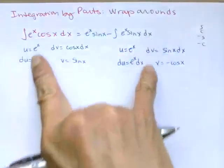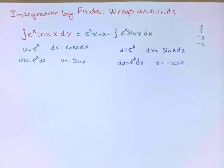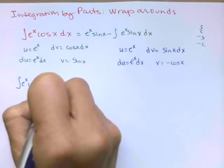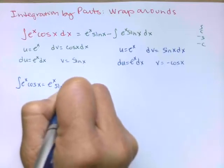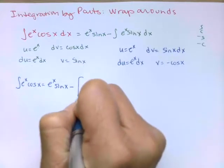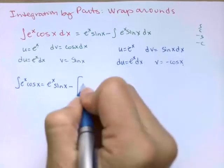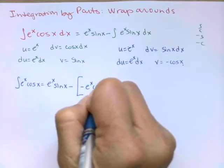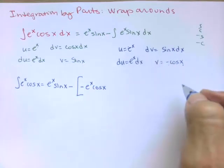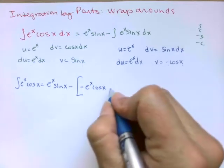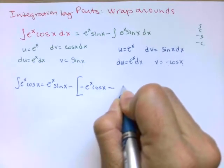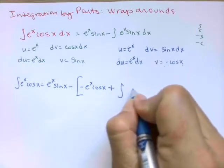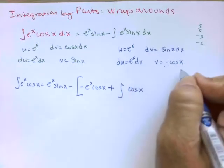I'm going to copy this line down and replace this last one with the parts. So I have integral e to the x cosine x dx equals e to the x sine x minus, doing some brackets here, u times v, so negative e to the x cosine x, minus the integral of v du.